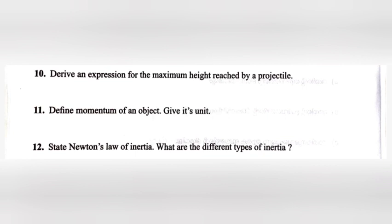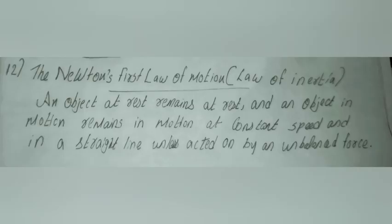Question 12: State Newton's law of inertia. What are the different types of inertia? Answer: Newton's first law of motion, also known as law of inertia: An object at rest remains at rest and an object in motion remains in motion at constant speed and in a straight line unless acted on by an unbalanced force.